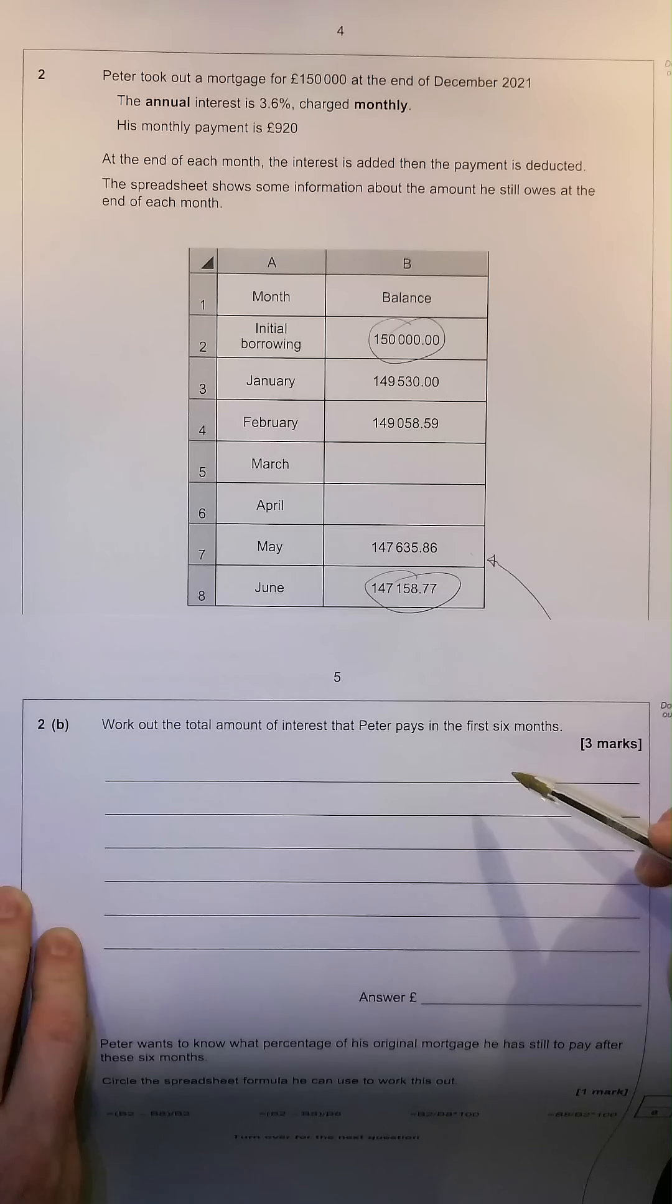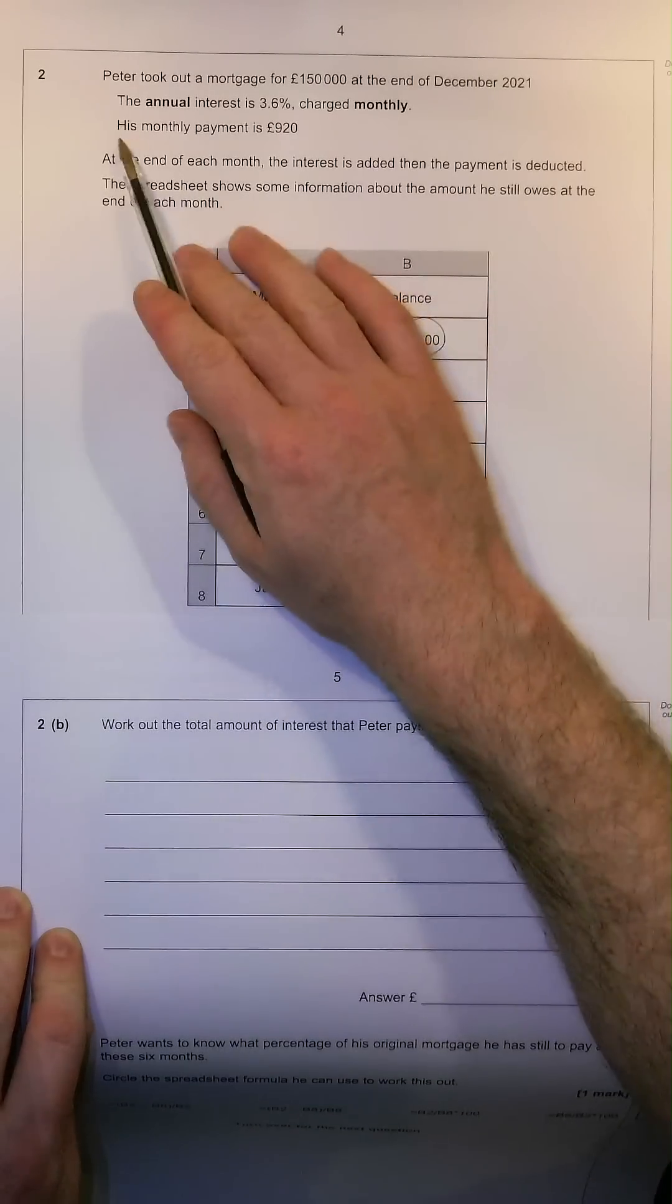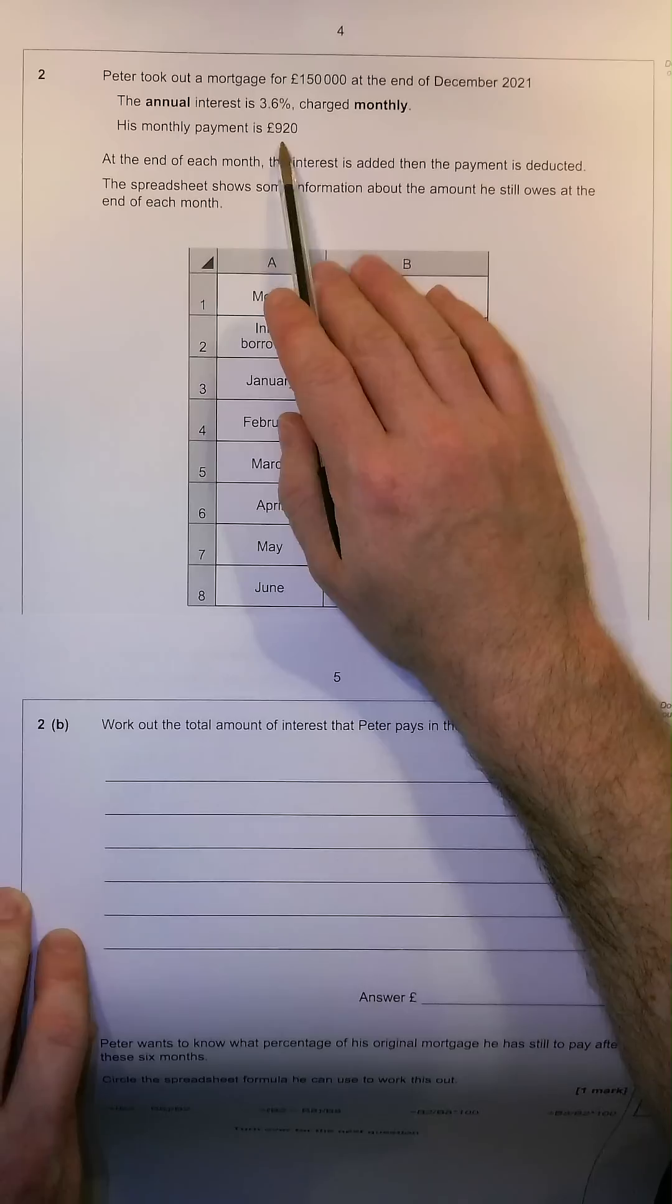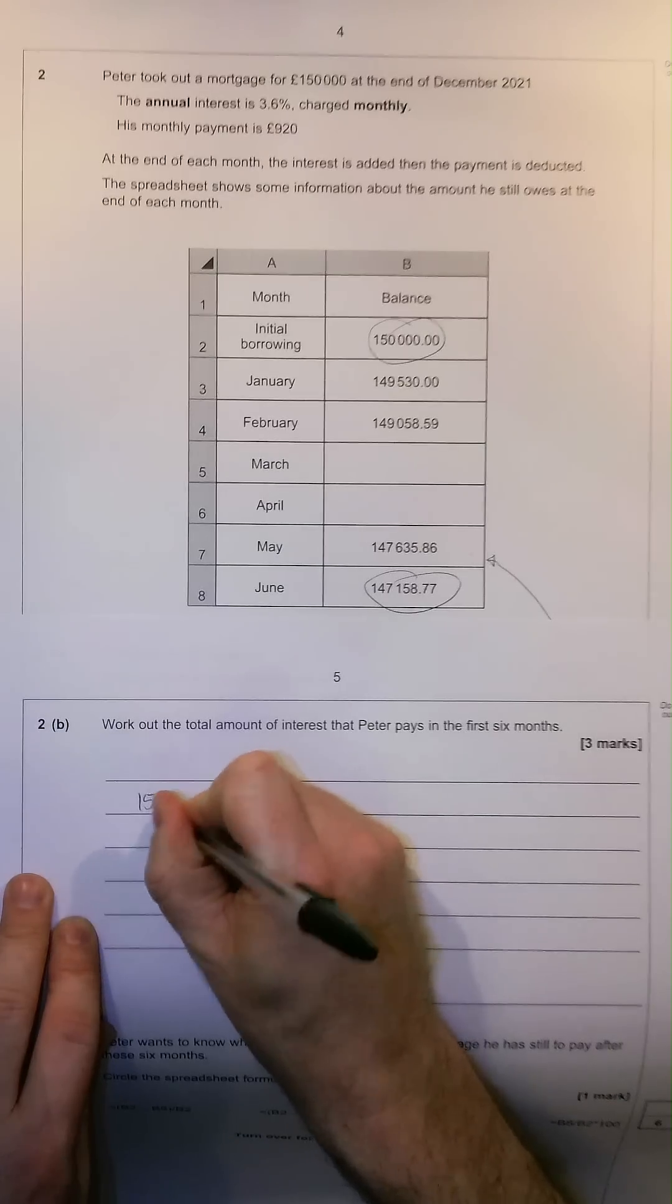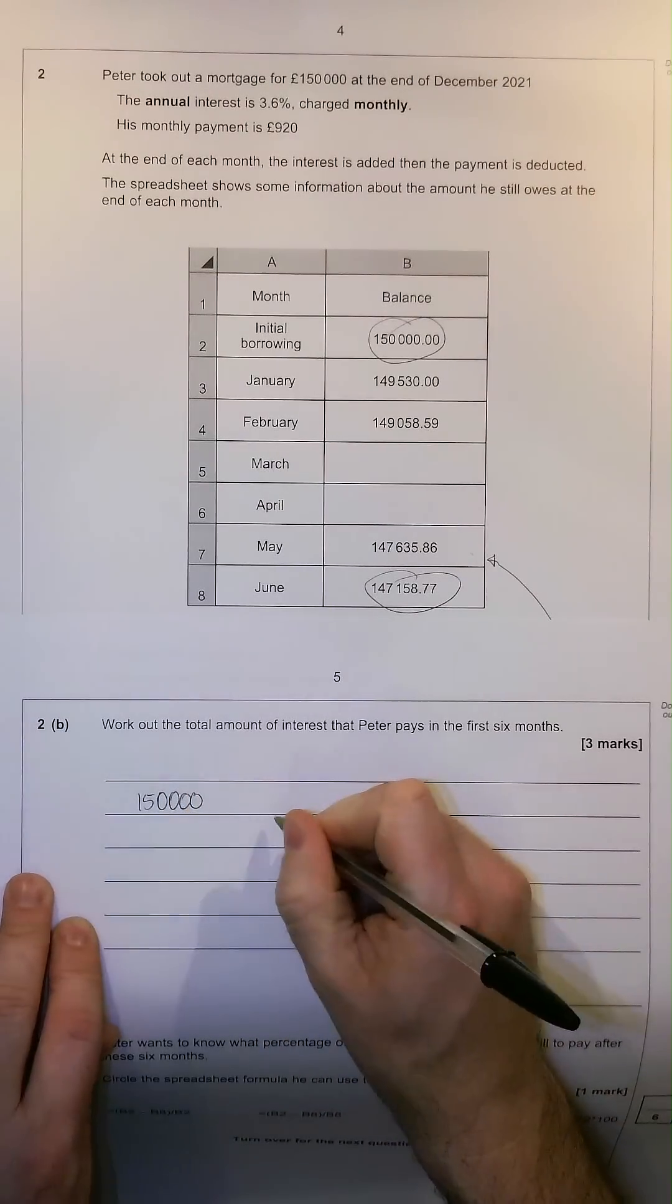Therefore, how much does he pay in interest? Well, his monthly payment is £920. So, we can easily work this out. Firstly, we're going to take the amount he initially borrowed, £150,000.